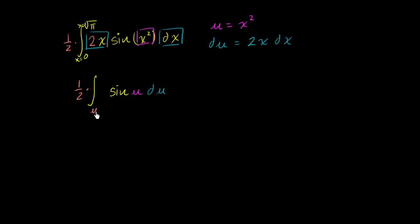So when x is equal to 0, what is u going to be equal to? This boundary is when x equals 0. Well, when x is equal to 0, u is also equal to 0. So this is from u equals 0. This is the same boundary. When x is equal to 0, u is equal to 0 based on how we defined u.